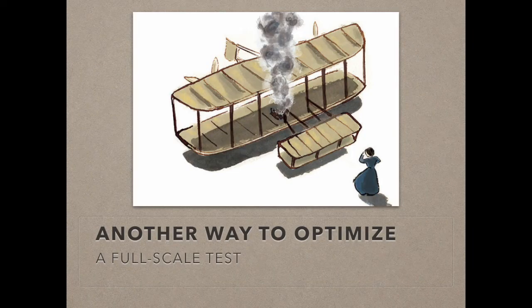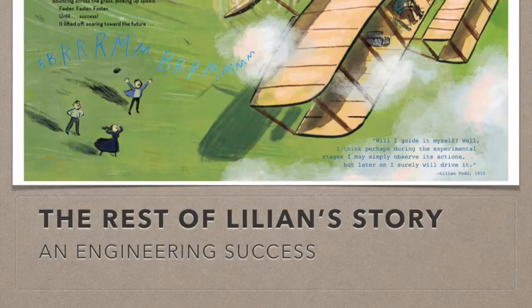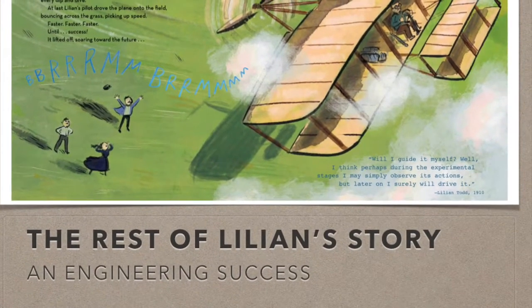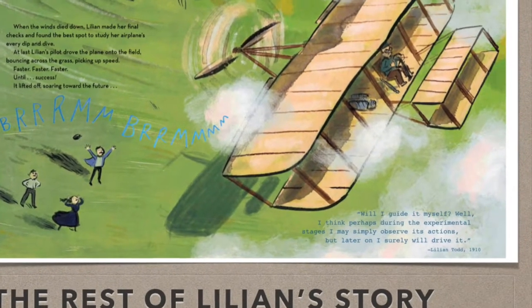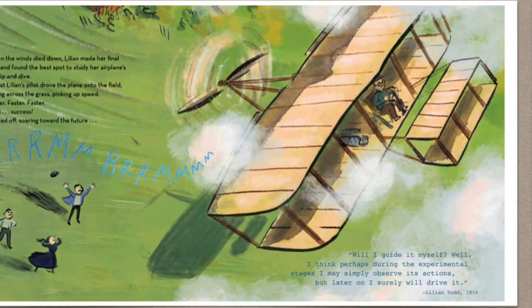After she does some small-scale tests with models, she moves on to a full-size test. Do you think things are going well here? No, she's having problems with her engine — she used a car engine on her airplane. But the cool thing is that in 1910, Lillian Todd's plane finally did fly successfully, and she became the first woman to design a working airplane on her own and helped kick off a future filled with flying.